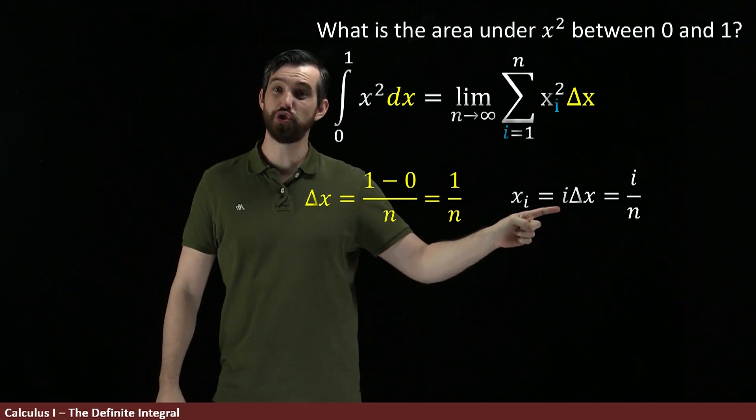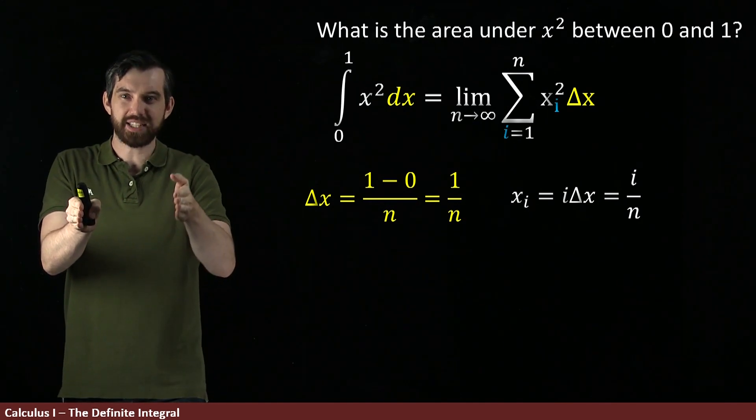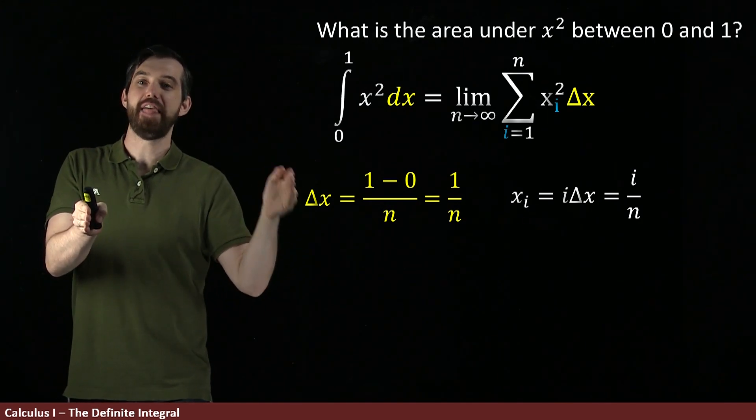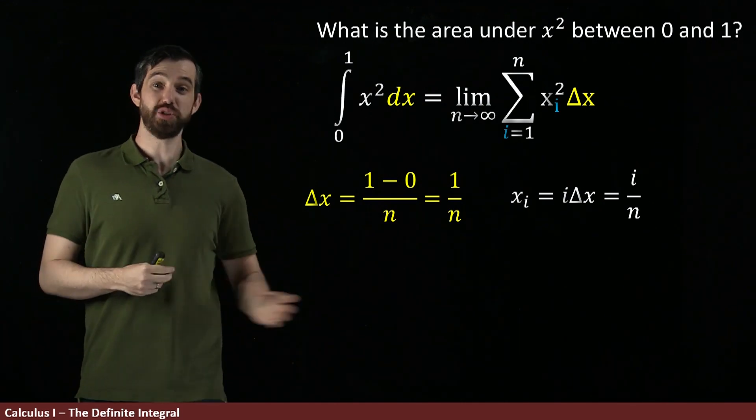And then if I choose a 2 here, so it's twice delta x, I'm saying I start at 0, I go over 1 delta x, I go over a second delta x, and that's the right endpoint of my second rectangle. So I think this formula works.